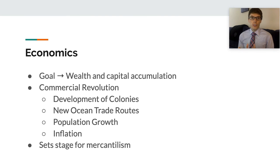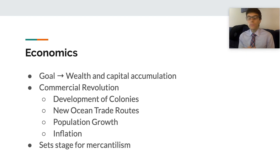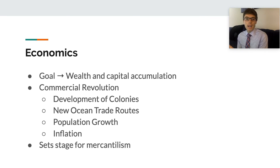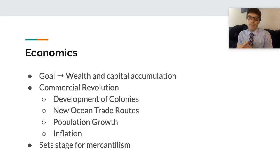The transformation to a trade-based economy using gold and silver is known as the commercial revolution, which affected all regions of the world. It resulted from four key factors: the development of European colonies, the opening of new ocean trade routes, population growth, and inflation. Inflation was caused partly by population pressure and partly by the increased amount of gold and silver mined and put into circulation. This high rate of inflation in the 16th and 17th centuries is called the price revolution, and it created the conditions for a mercantile economic system.